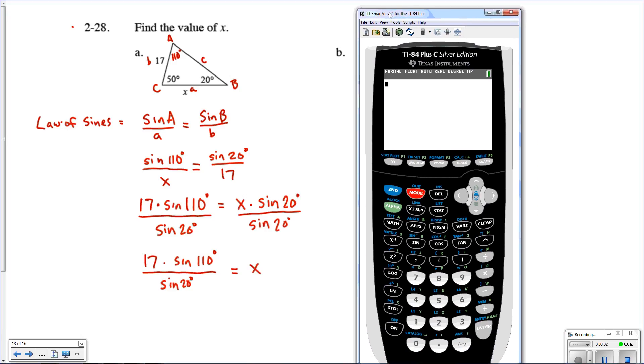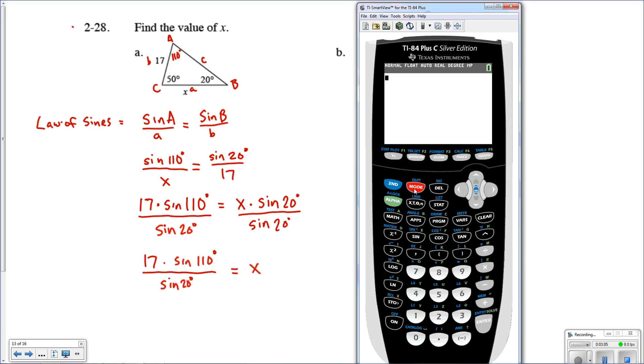So when I pull out my calculator here, one thing I definitely want to make sure I look at is I want to press the mode button and make sure that I'm in degree mode. You don't want to be in radians. If you're in radian mode, you need to arrow down, highlight degree, and press enter. You see mine's already on there. Then second mode to quit out. I'm going to type in this expression here. I'm going to do 17 times the sine of 110 degrees, and then we're going to divide it by the sine of 20 degrees.